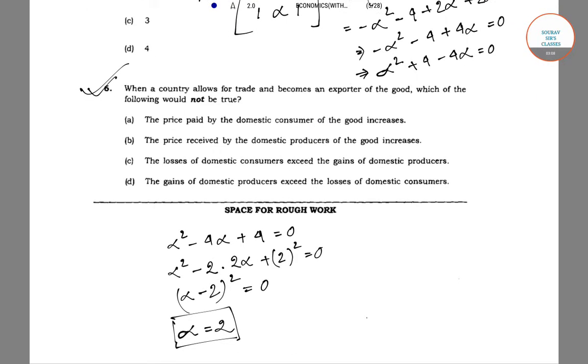In question number six, it is asked: when a country allows for trade and becomes an exporter of the good, which of the following would not be true?